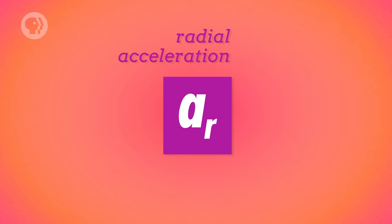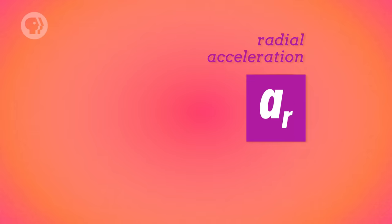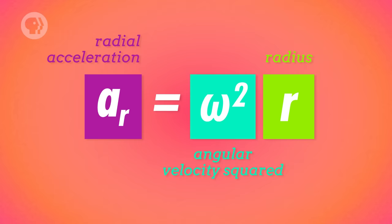And as an object rotates, each point on it can actually accelerate in two different ways. Radial acceleration is another term for what we've been calling centripetal acceleration up until now. It's the acceleration inward of any point on our rotating object, and it's equal to the angular velocity squared times the radius.